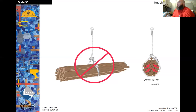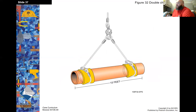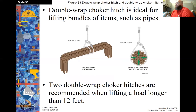For a choker hitch, use a clevis around the cable — not a hook. Clevises are round and smooth, allowing the cable to flow freely so it tightens as it lifts the load. A double choker hitch is mainly used on longer pieces of material. A double wrap choker hitch is ideal for lifting bundles of items such as pipe. Two double wrap choker hitches are recommended when lifting a load longer than 12 feet.